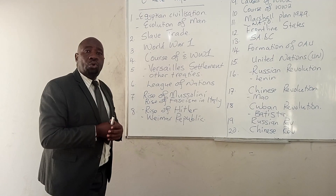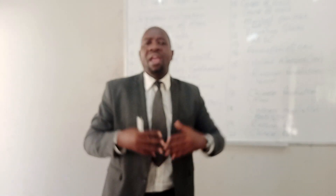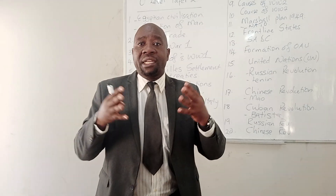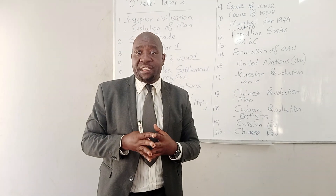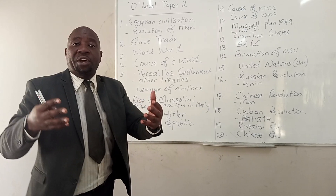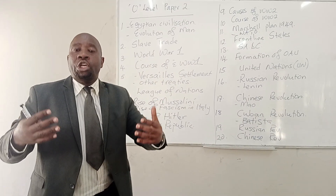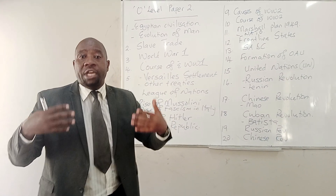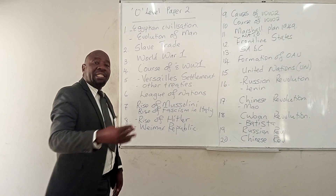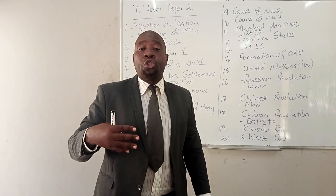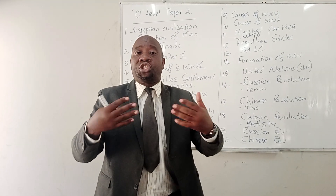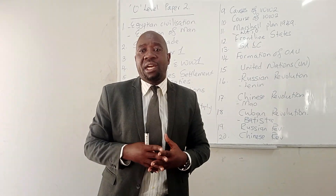Number five, they can ask you about what took place after World War One. After World War One, European powers met in 1919, resulting in the so-called Versailles settlement. They can ask you on the Versailles settlement, the coming in of the big three — Woodrow Wilson, Georges Clemenceau, and Lloyd George — and what they did at the settlement. They can also ask you about other treaties signed by the defeated powers, such as the Treaty of Saint-Germain, the Treaty of Neuilly, and the Treaty of Sèvres.